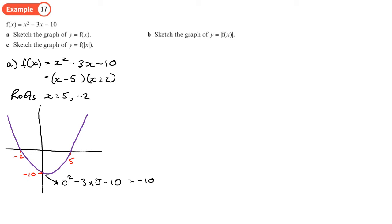Now we've got those points. So the first one where the modulus is around the whole thing, we take the part of the graph which is below the x-axis and we flip it up. So you end up with something that looks a bit like a W.